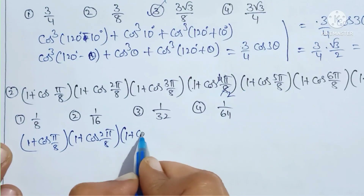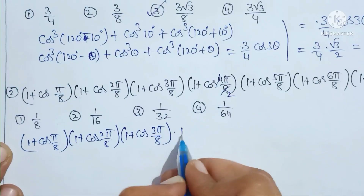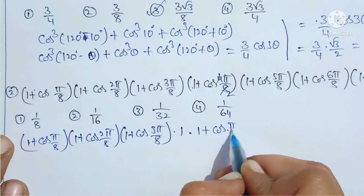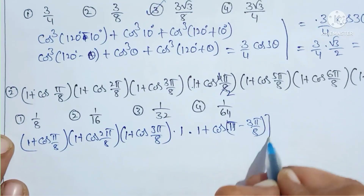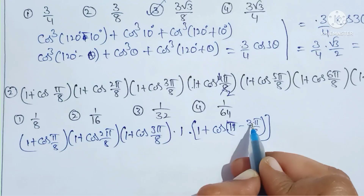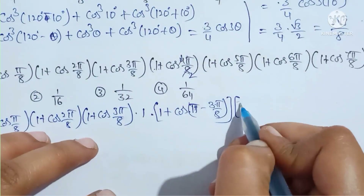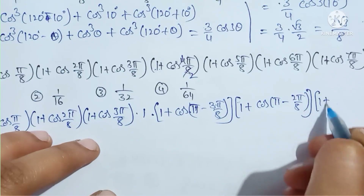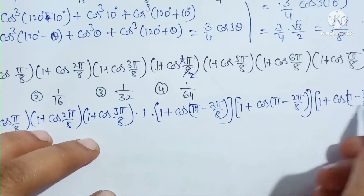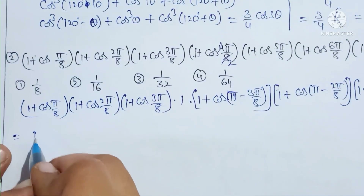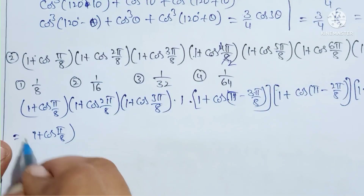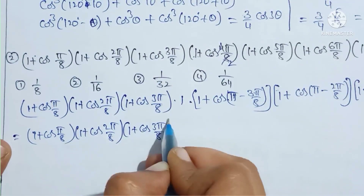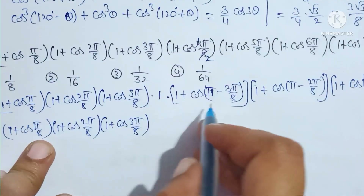Continuing: × (1 + cos(5π/8)) × (1 + cos(6π/8)) × (1 + cos(7π/8)). Now, cos(7π/8) = cos(π - π/8) = -cos(π/8) using the second quadrant identity, so (1 + cos(7π/8)) = (1 - cos(π/8)). Similarly, (1 + cos(5π/8)) = (1 - cos(3π/8)).